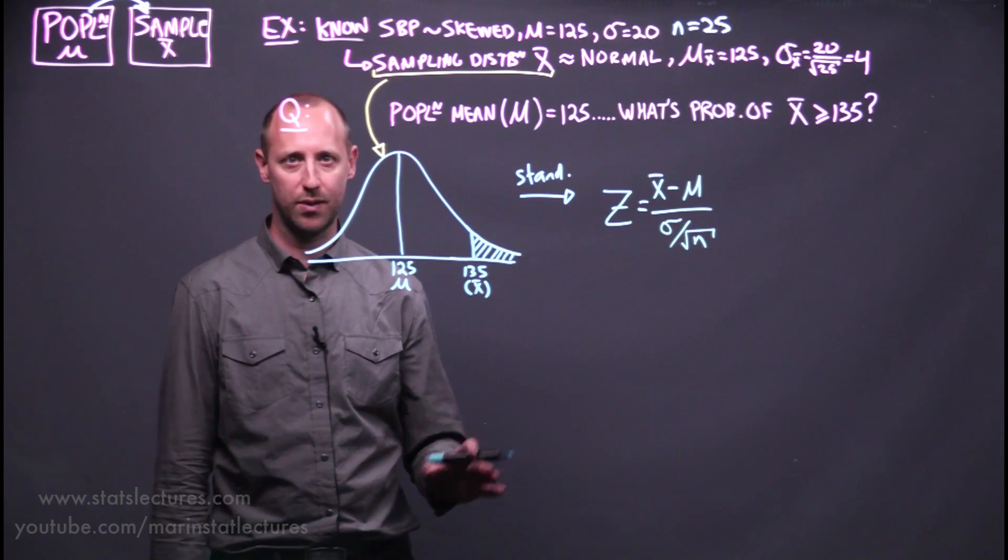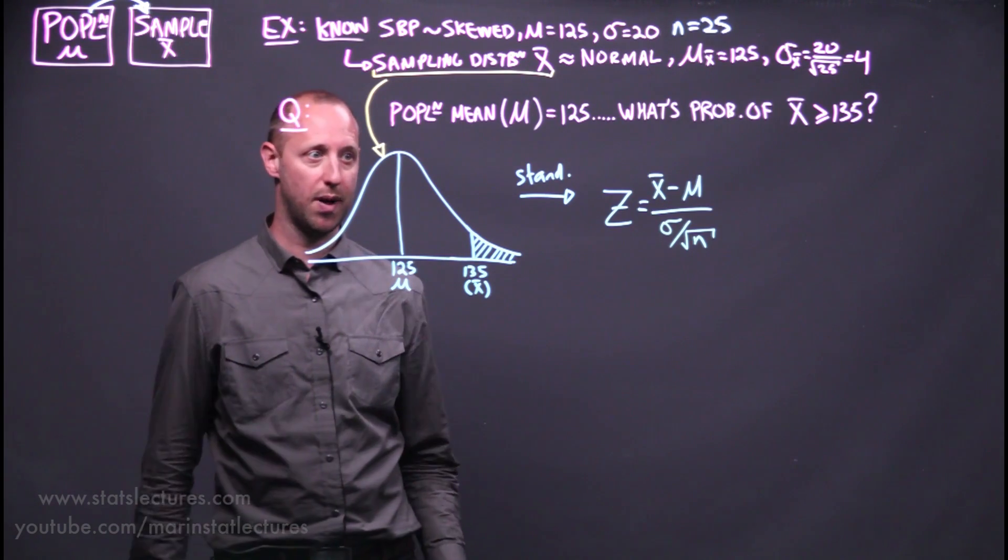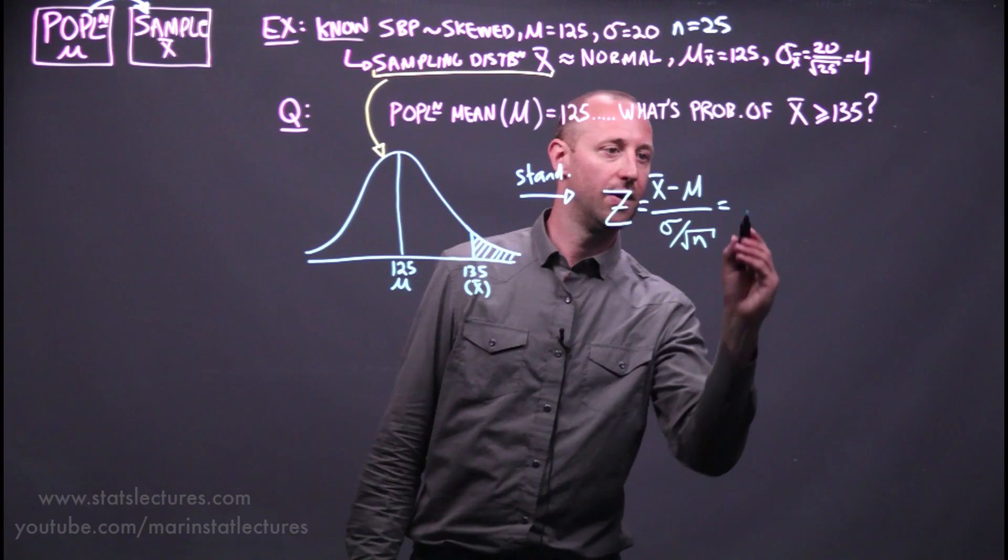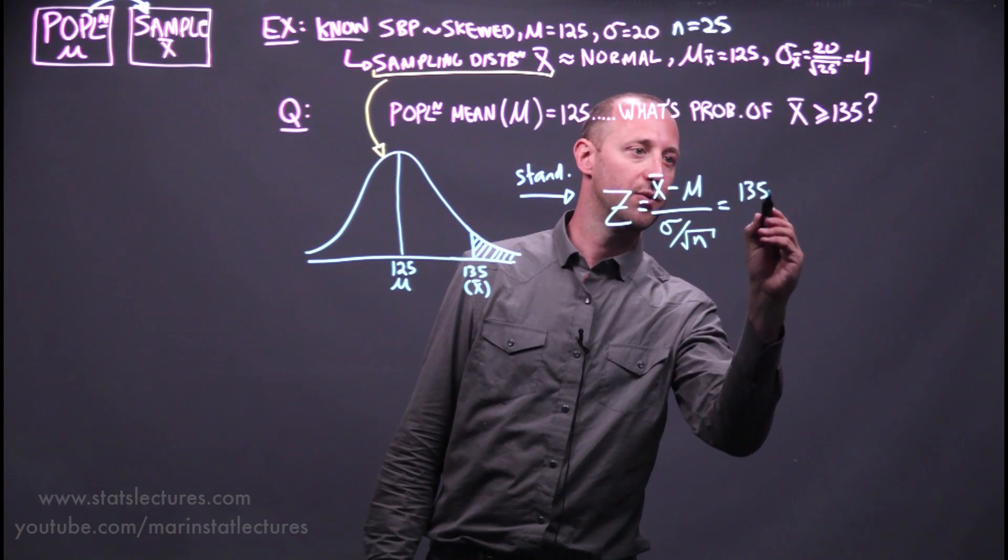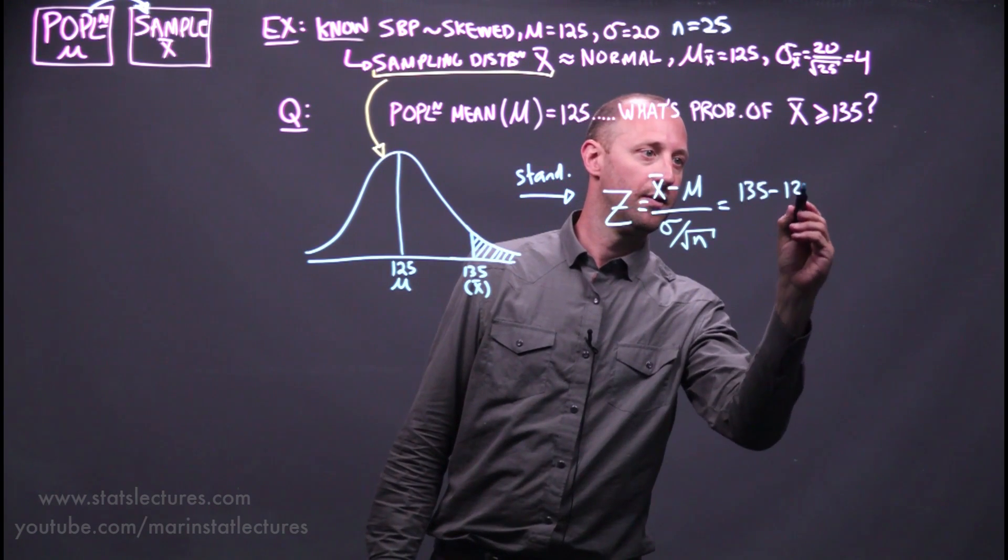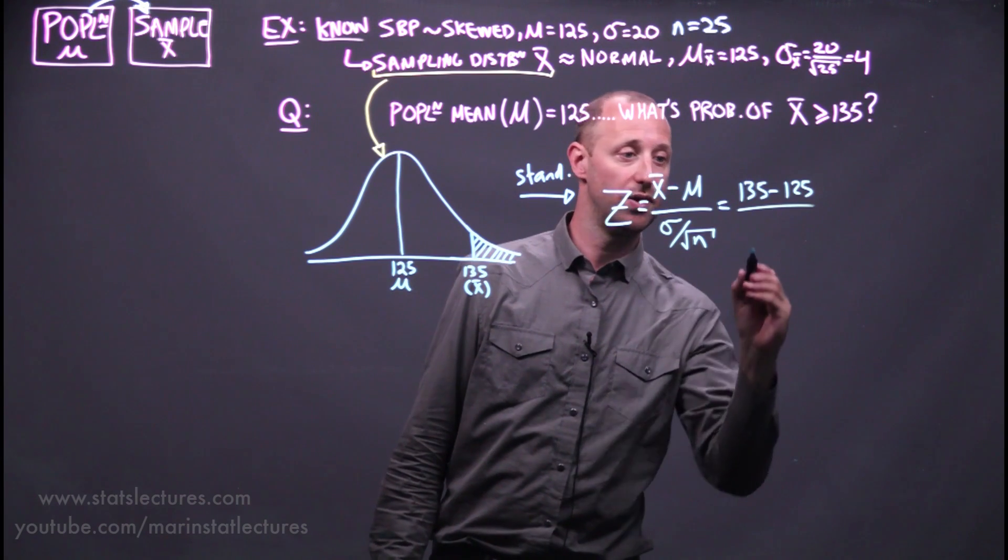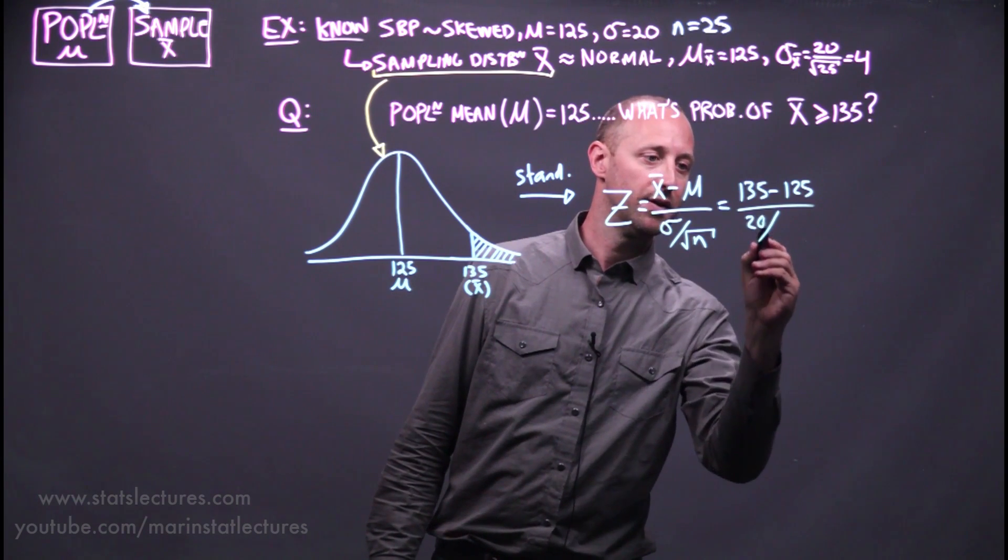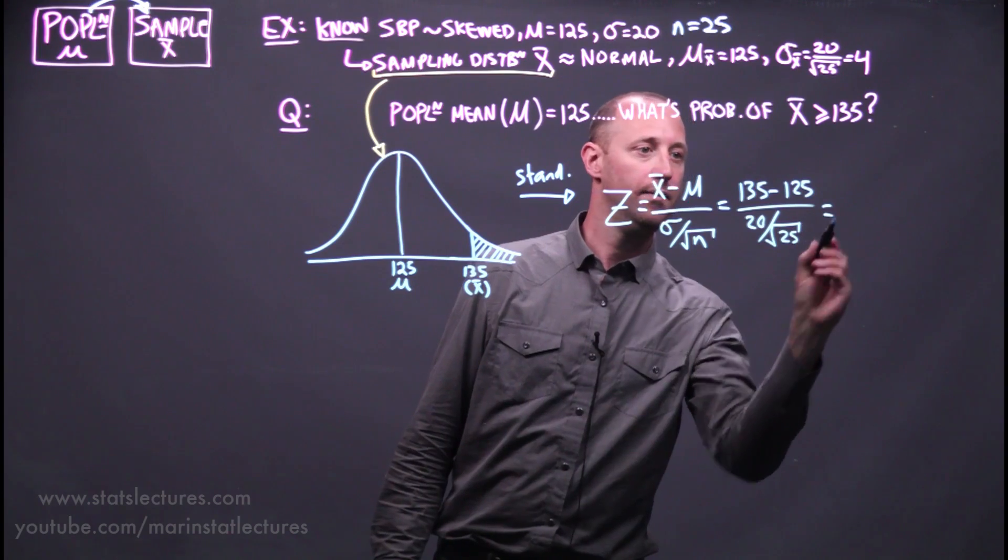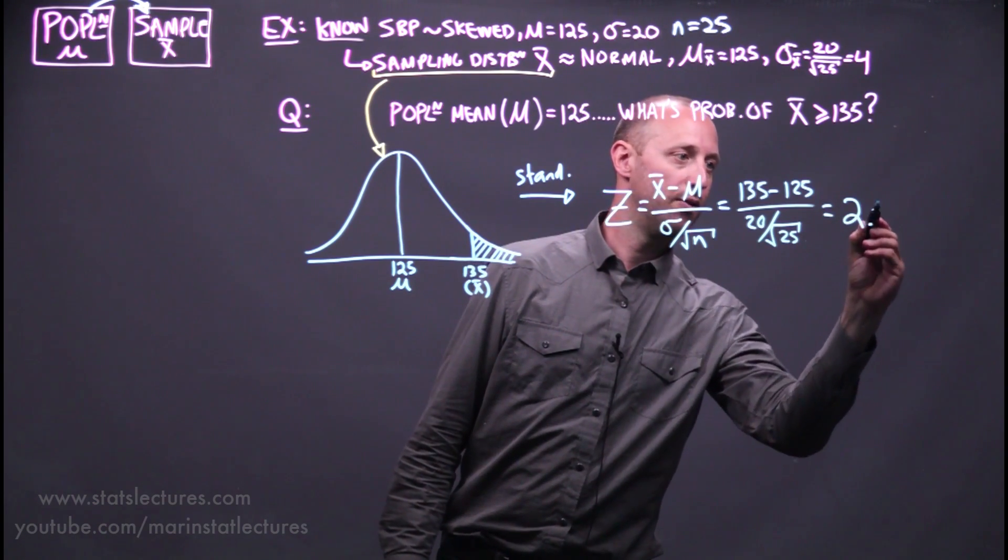In our example, how far is 135 from the population mean of 125 divided by the standard error? And this comes out to 2.5.